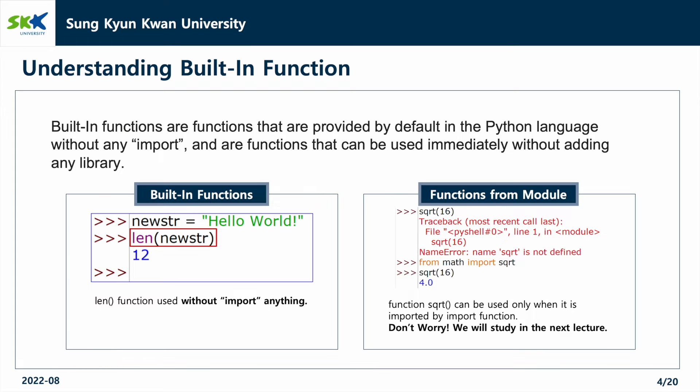Built-in functions are functions that are provided by default in the Python language without any import, and they can be used immediately without adding any library. You can see that len is one of the built-in functions that can be used without import. But as shown in the example, the function sqrt that must be imported from the module will cause an error when used without importing from the library. Don't worry, we will study more about this next time.